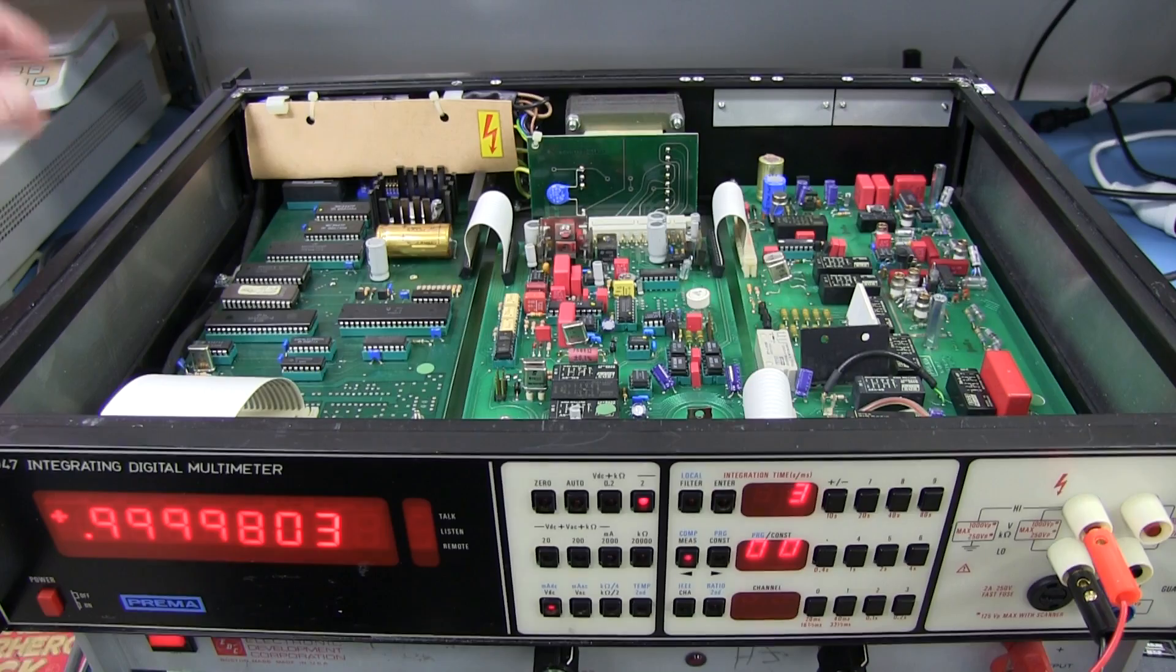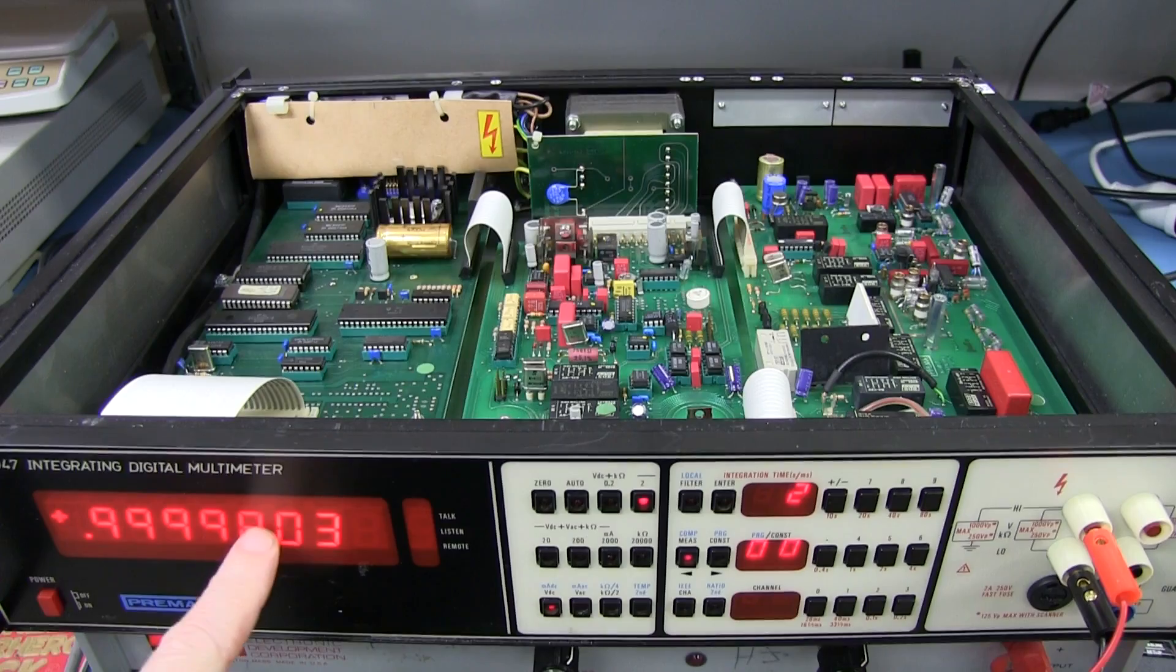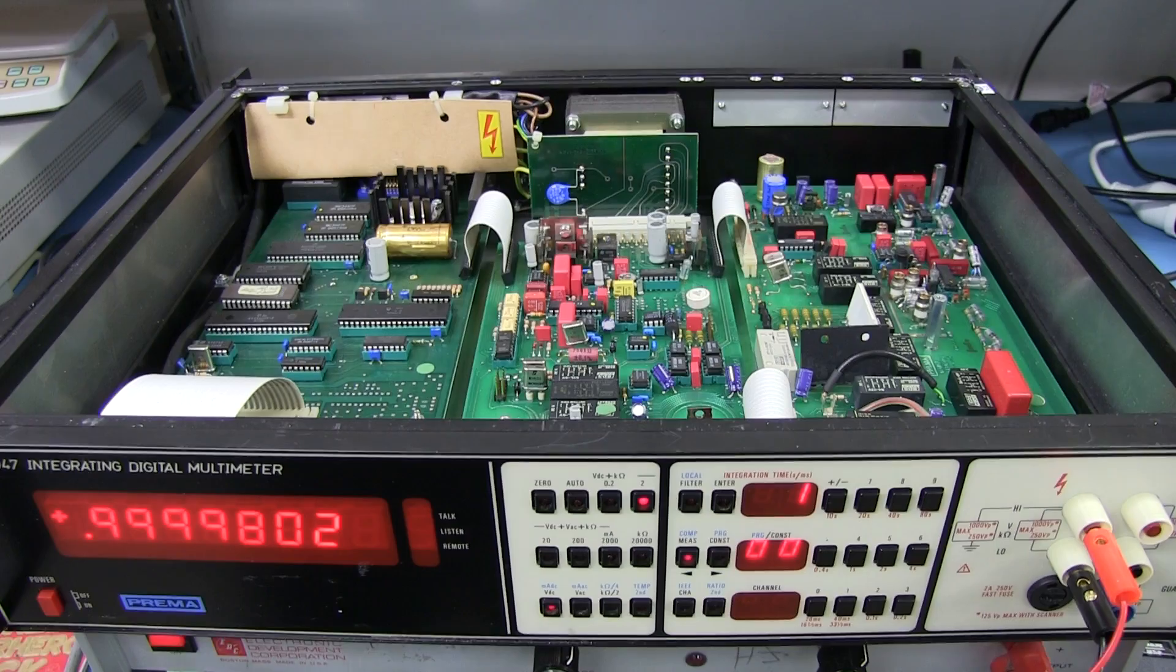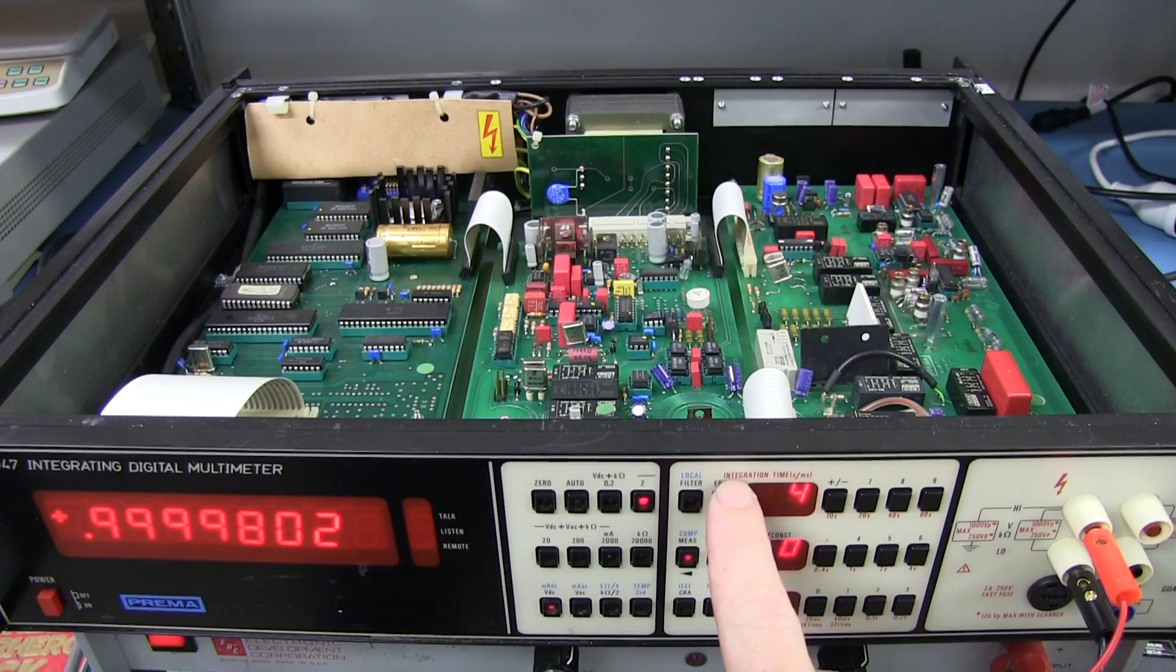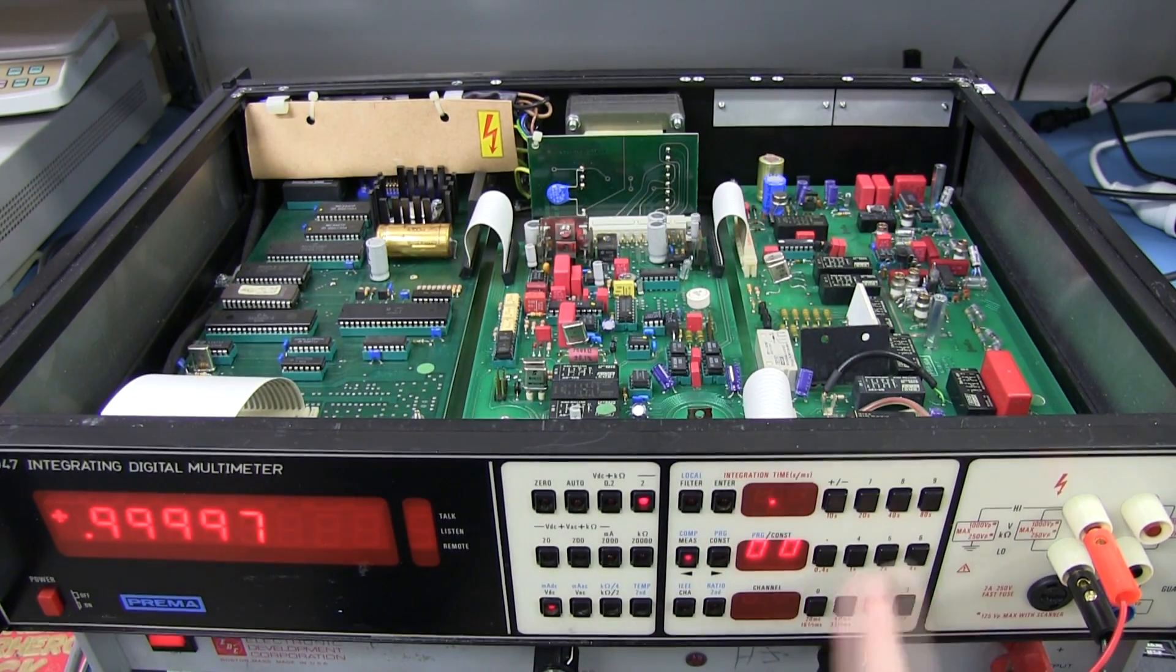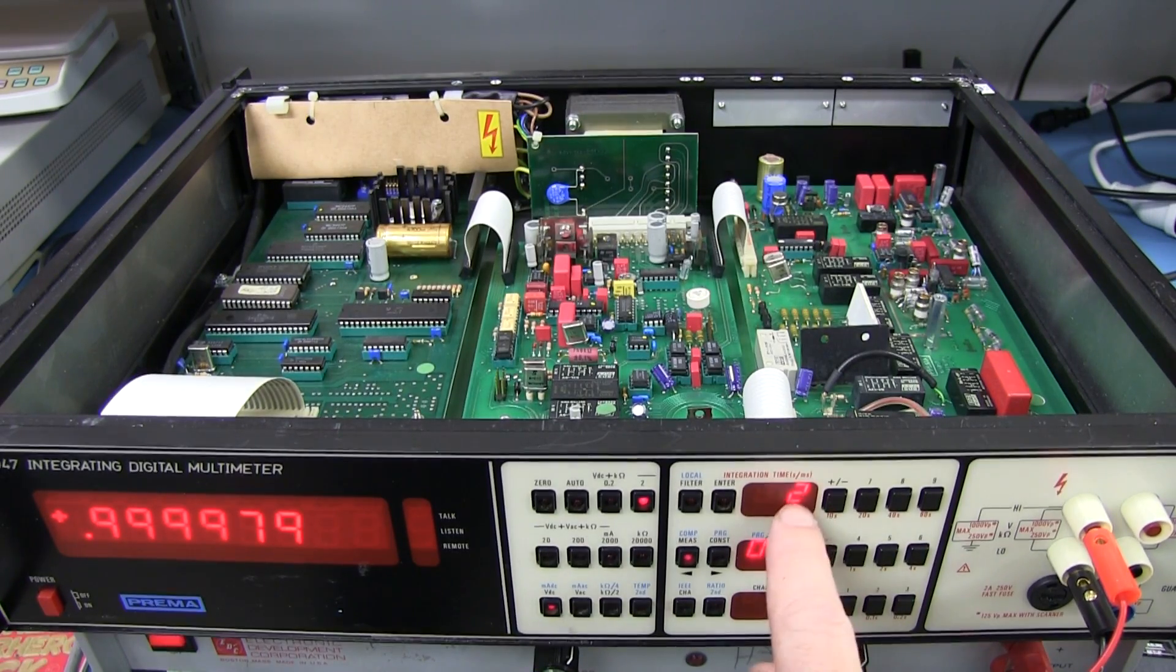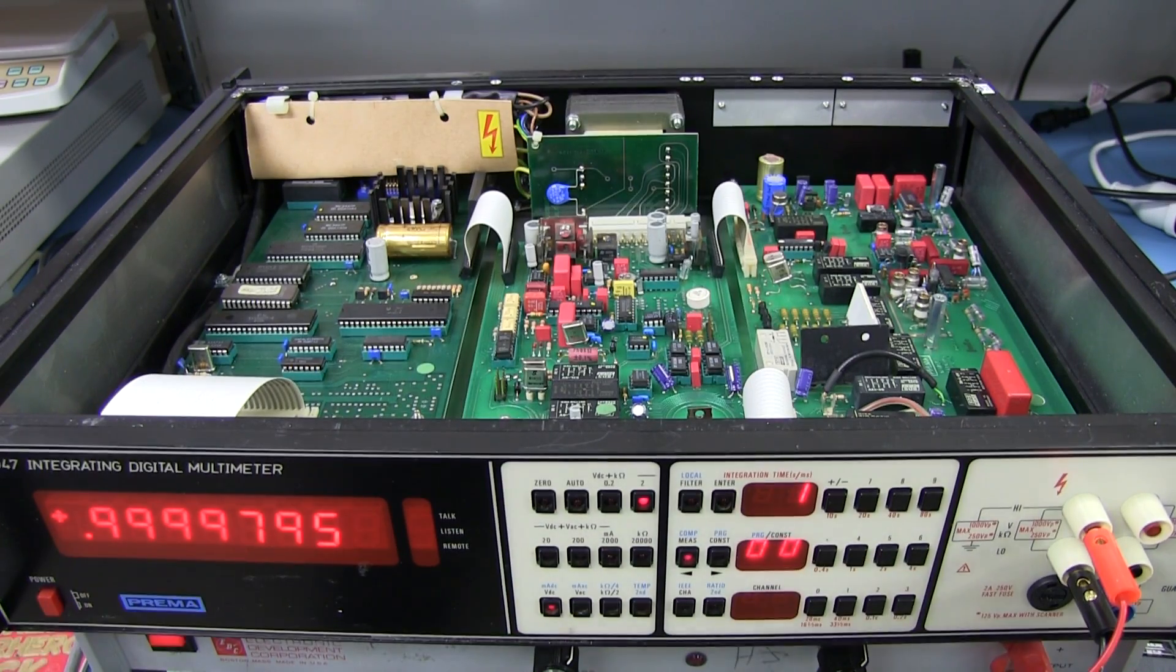Now I did mention in the previous video that it appeared to be slightly out of calibration. I would have expected it to be better than this, especially on the DC volts. And by the way, I figured out how to switch the time here with this integration button. It's got a nice little countdown timer that counts down to the next measurement interval. Really quite neat. You can go up to 80 seconds.